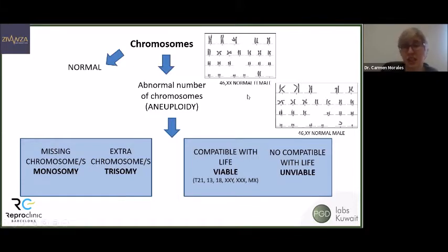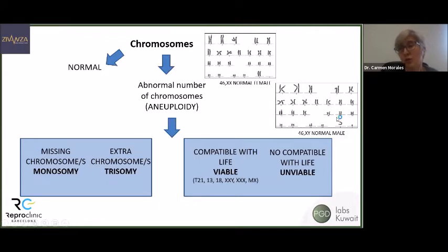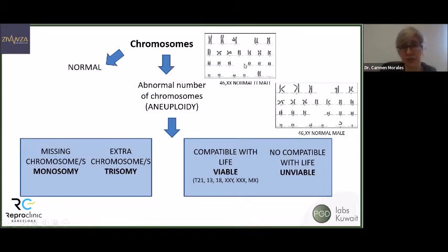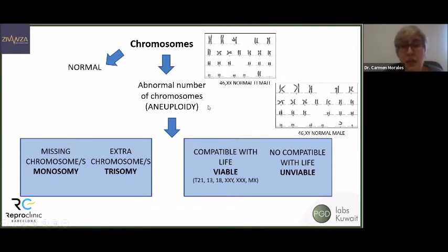The main difference in the karyotype of males and females is that females have two X chromosomes, while males have one X and one Y chromosome. When we analyze embryos, we can find that they have a normal chromosomal complement with 46 chromosomes. But we can also detect embryos with an abnormal number of chromosomes — what we call aneuploid embryos.